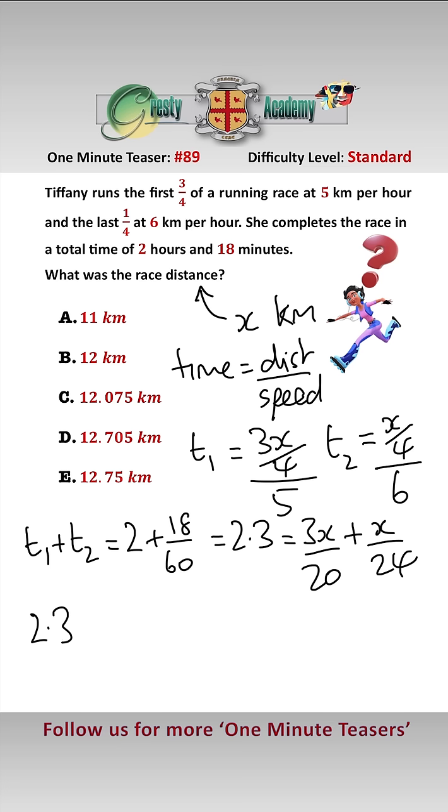Putting this over a common denominator, we get 2.3 equals 18x plus 5x over 120.